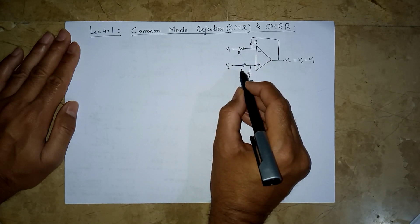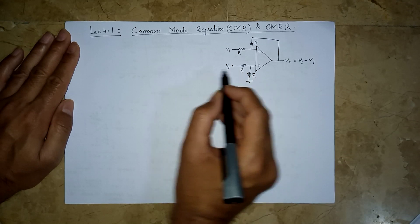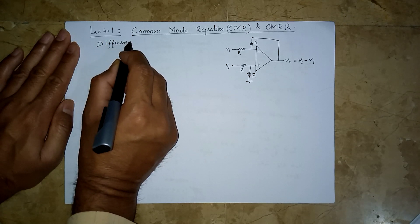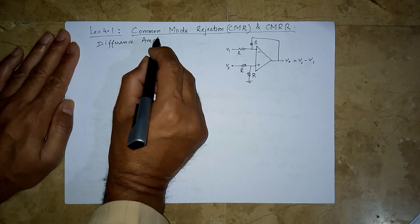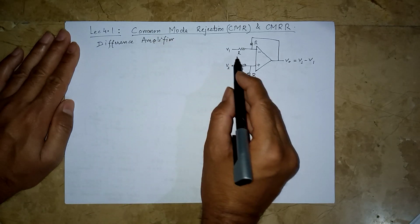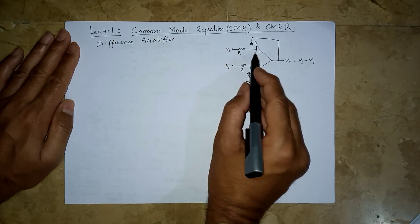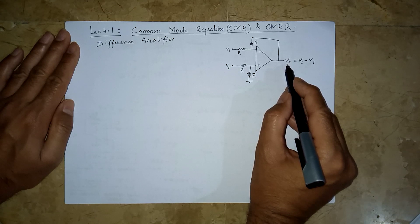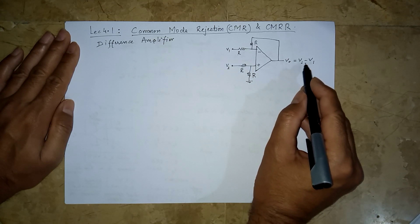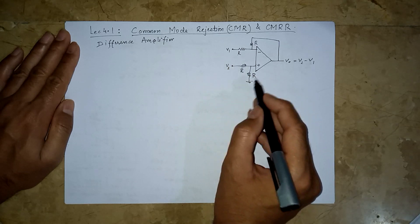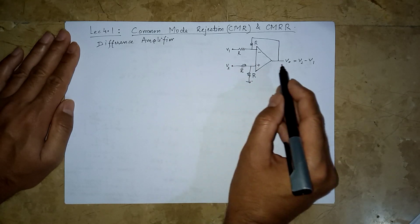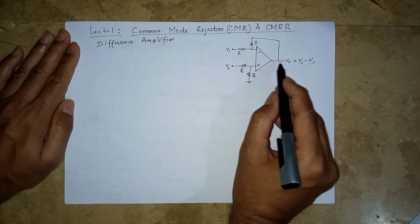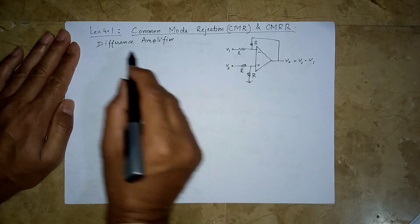Remember the difference amplifier — an operational amplifier is often called a difference amplifier because it actually amplifies the difference of the inputs. There are two input pins and the op-amp amplifies the difference of these two inputs. We have already derived that if all the resistors are of equal value, we get the exact difference of the two inputs at the output.